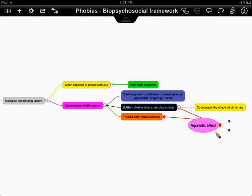Now, a biological explanation for an excessive physiological response to our phobic stimulus is a dysfunctional GABA system. GABA, of course, being the chief inhibitory neurotransmitter in the nervous system that counteracts the effects of the major excitatory neurotransmitter in the nervous system being glutamate.